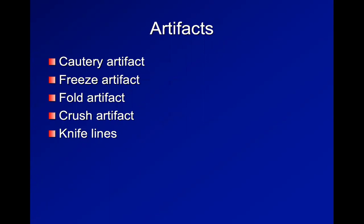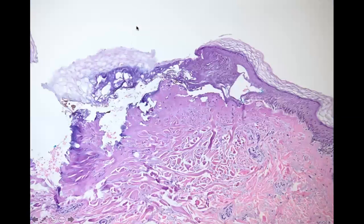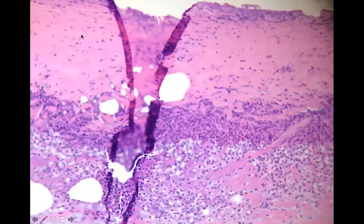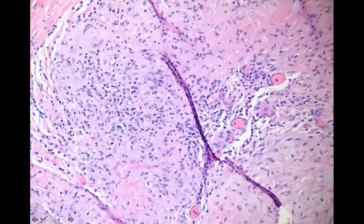In our last section, we'll cover a few artifacts. One artifact is a cautery artifact — when we apply an electrical current, all the nuclei sort of point toward that electrical current, so you get this polarization of the nuclei, and it looks a little burnt and melting. This is what we see with electrocautery. This is a freeze artifact — it expands the tissue and you get a lot of white vacuolization. These are fold artifacts — when the tissue is cut, sometimes it gets folded and we'll see things on different planes.